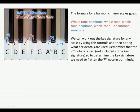Let's work out A minor using the formula. Starting on A: whole tone to B, semitone from B to C, whole tone C to D, whole tone D to E, semitone E to F, then the three semitones up to G sharp, then semitone to A. So A minor has one sharp — G sharp. But for the key signature we lower the raised seventh again, so A minor's key signature has no sharps or flats, but we add the raised seventh as an accidental.